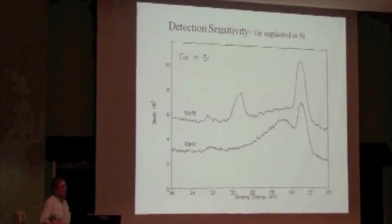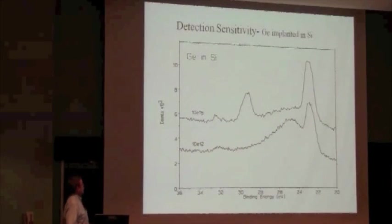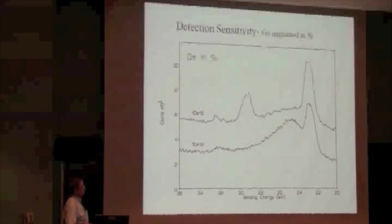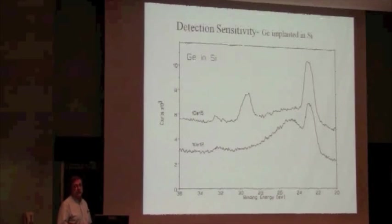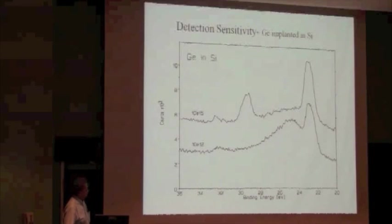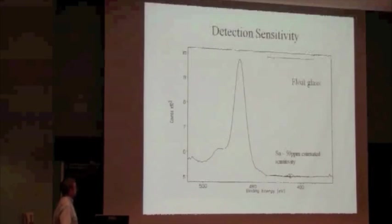We've talked about detection sensitivity. I know that you have the very surface sensitivity associated with low energy ion scattering, but it is also possible to work with this. For example, if we take a look at germanium implanted in silicon, we can get down to 10 to the 12 kinds of concentrations, easily 0.1 percent.